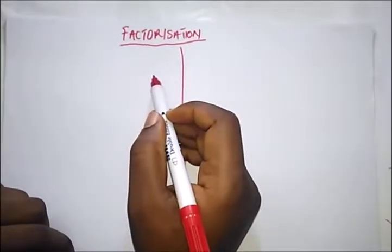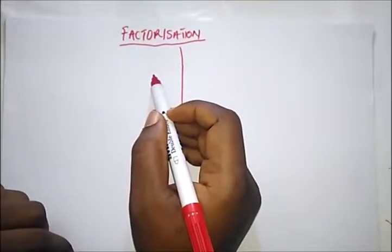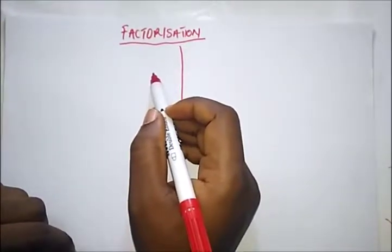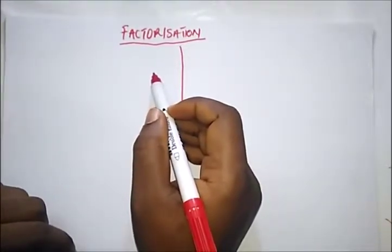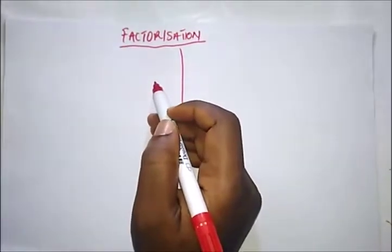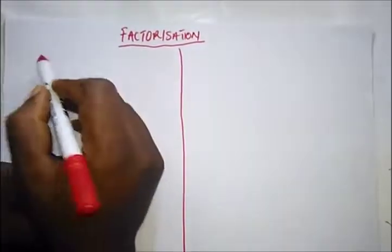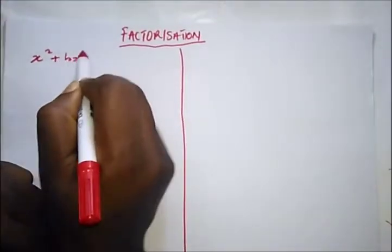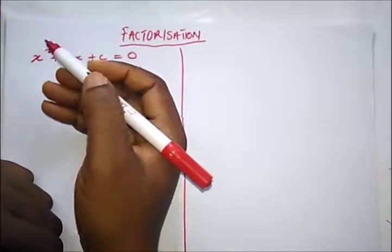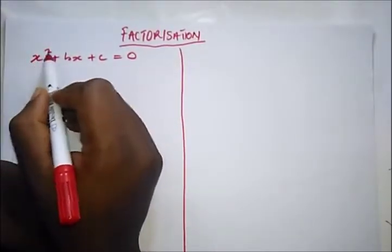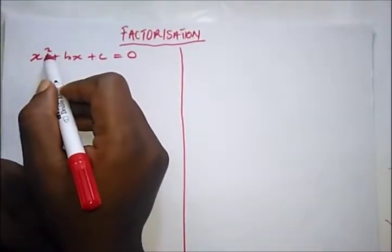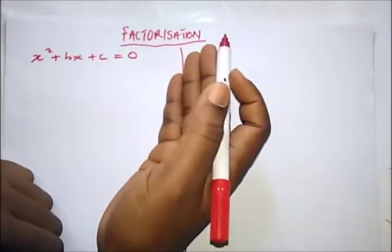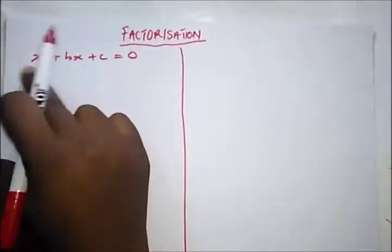Hello guys, welcome to Destined to Win Tutorial. Today we're going to be introducing a new topic known as factorization. Factorization is a method used in solving quadratic equations. Quadratic equations are of the form x² + bx + c = 0, where you have a linear equation in which x doesn't carry a power. So this is a quadratic equation, and factorization is one of the methods used to solve it.